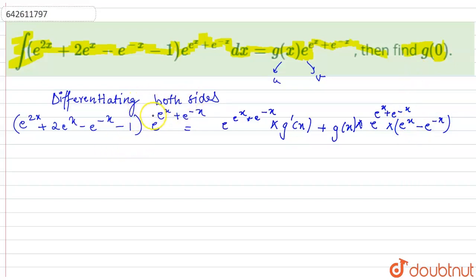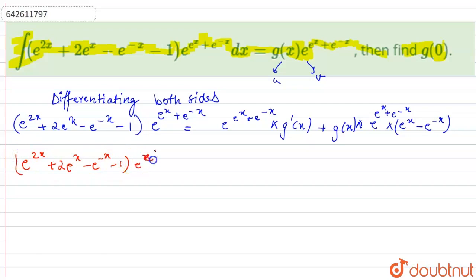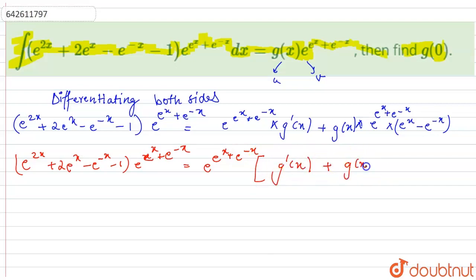Now we reformulate. We can see that e^(e^x + e^(-x)) can be taken as a common factor. Taking it out, we are left with g'(x) plus g(x) times (e^x - e^(-x)) on the right-hand side. This common factor cancels from both sides.